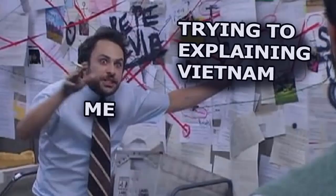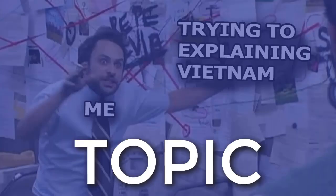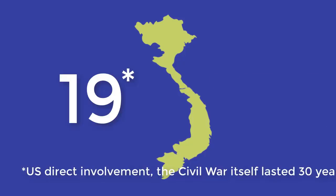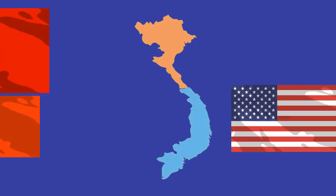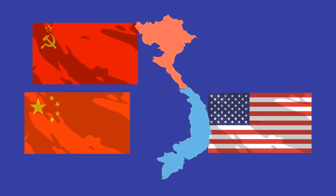The Vietnam War is an immensely complex topic. The war itself lasted 19 years and had massive implications for global politics. So why did the United States secretly enter the war in August 1954, and why did they leave in 1973?